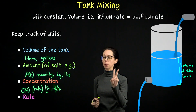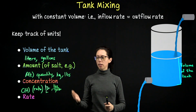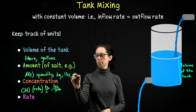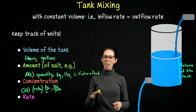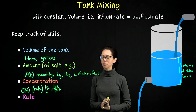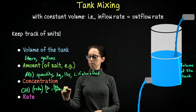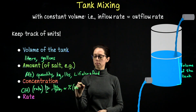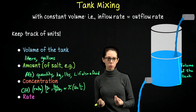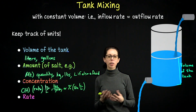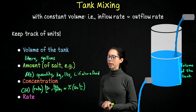In our second example, the substance we're tracking is also a fluid, so its quantity will be in liters. We'll have liters of pollutant in a tank whose volume is measured in liters. That means the concentration is liters per liter, which is often given as a percentage — what percentage of this fluid is the pollutant. That's how we'll track its concentration.